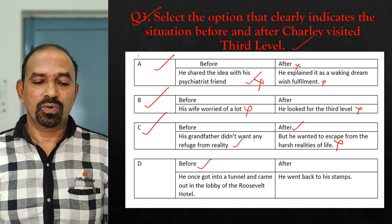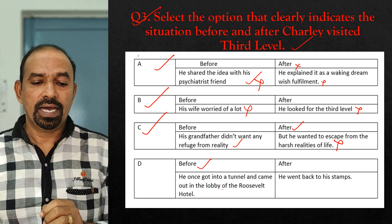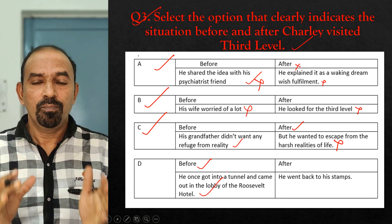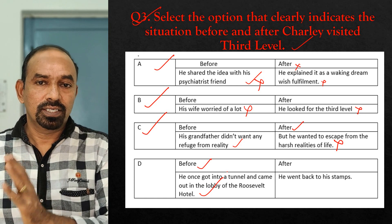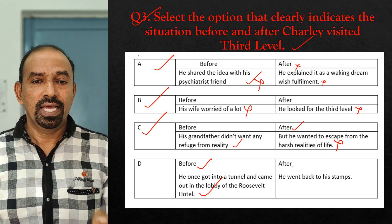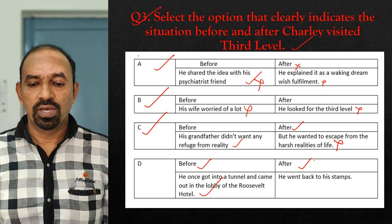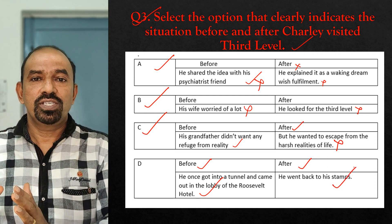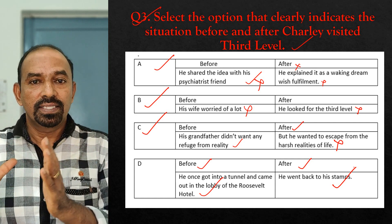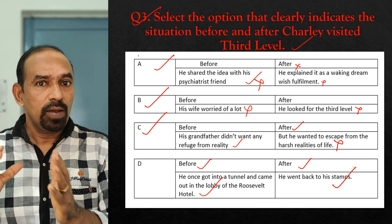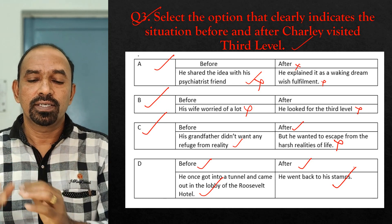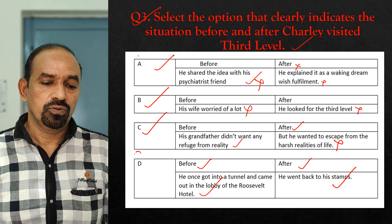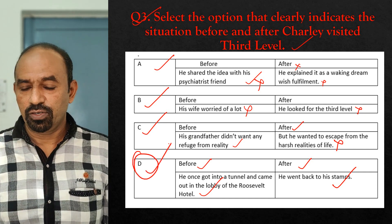Option D — Before: He once got into a tunnel and came out in the lobby of Roosevelt Hotel. Yes, this happened before he found out the third level, so the before-incident is correct. After: He went back to his stamps — he went back to his stamp collection when he couldn't find the third level again. So D is the right option.